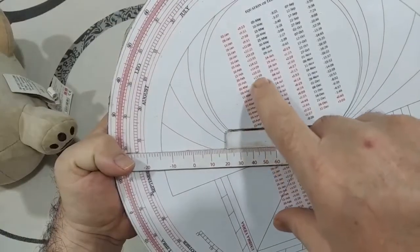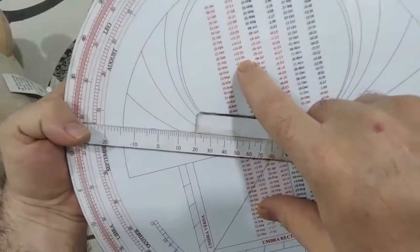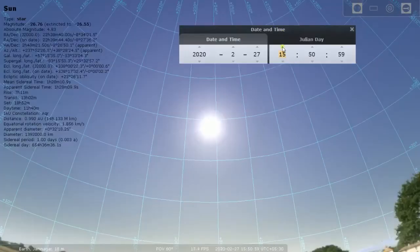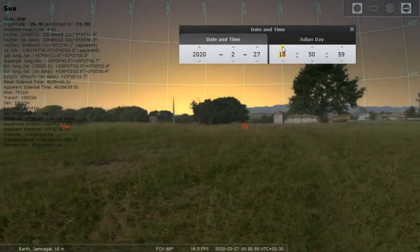Hence, the sunset will be at 18 hours 50 minutes 45 seconds, or 6 hours 50 minutes 45 seconds evening time. Let's verify. Thank you.